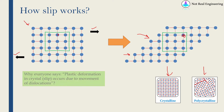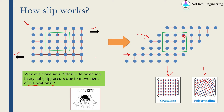You must have heard at many places that plastic deformation in a crystal occurs due to the movement of dislocations. When people say this, it is mostly pertaining to slip — plastic deformation due to slip. To understand why, let's consider just this specific area and go to the next slide.